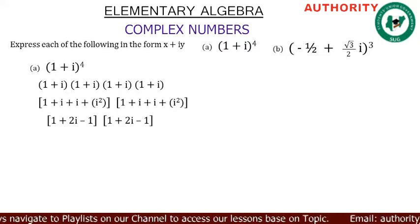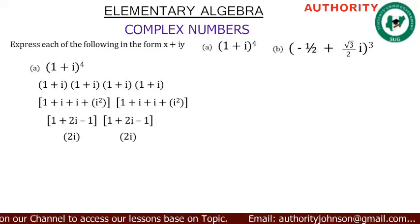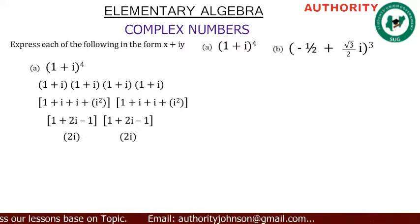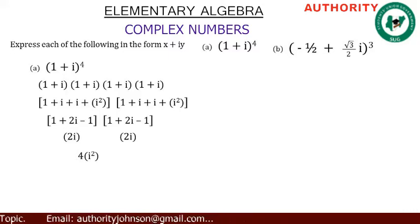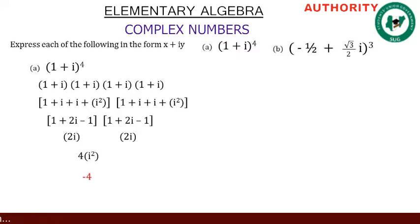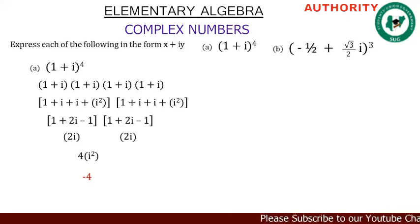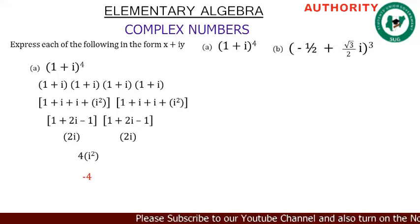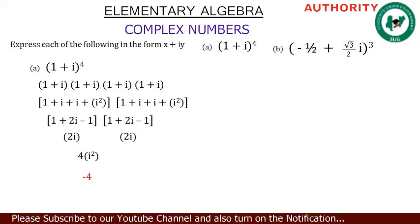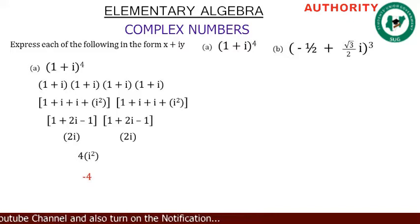So 1 minus 1 gives us zero, therefore the first bracket becomes 2i and the second bracket is also 2i. So we have 2i times 2i, which gives us 4i squared. Since i squared is minus 1, we have 4 times minus 1 equals minus 4. Therefore, (1 + i)^4 expressed in the form x + iy gives us minus 4 — the real part is minus 4 and the imaginary part is zero.